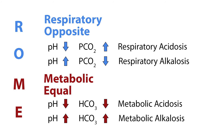Another way to remember acid-base imbalances is with the mnemonic ROME: respiratory opposite, metabolic equal. We know respiratory involves CO2, and CO2 will be going in the opposite direction of the pH. If the pH is low, or acidotic, the CO2 will be high, also acidotic, resulting in respiratory acidosis. When the pH is high, or alkalotic, and the CO2 is low, also alkalotic, we have respiratory alkalosis. We know metabolic involves the bicarbonate ion, HCO3. When the pH is low, or acidotic, and the HCO3 is low, also acidotic, the result is metabolic acidosis. If the pH is high, alkalotic, and the HCO3 is also high, also alkalotic, we have metabolic alkalosis.